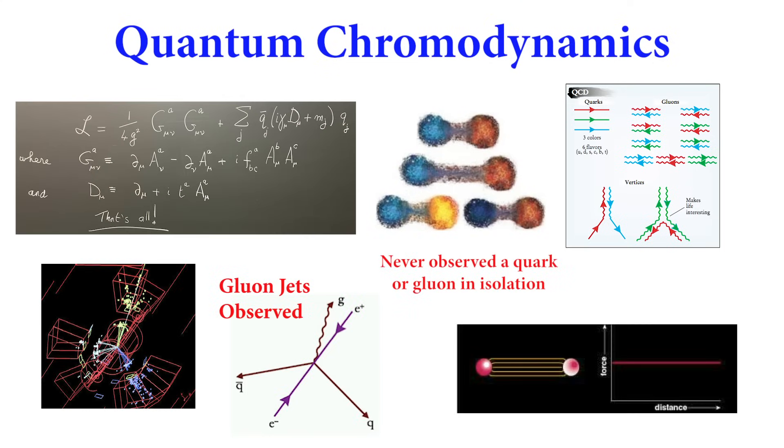Quarks do not actually have these colors, but just as white light can be divided into different colors, so can quark systems be divided into equal amounts of red, green, and blue.